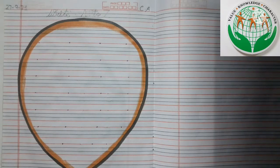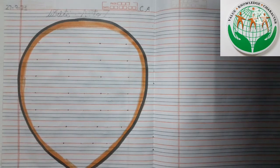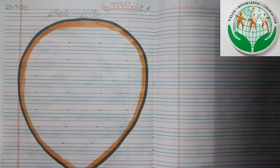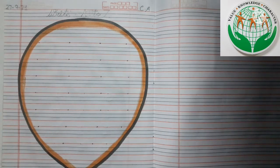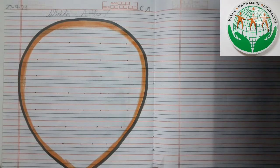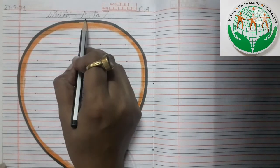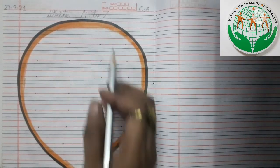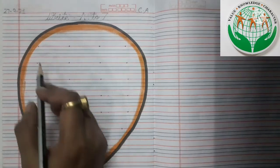See kids, today ma'am will draw a balloon. Ma'am ne aaj kya banaya hai? Aaj ma'am ne balloon banaya hai. And kids, inside this balloon we will write our alphabets. Alphabets A to Z. Aaj hum A to Z poore alphabets likhenge.